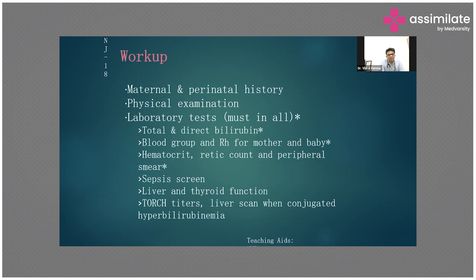What is the workup? First and most importantly, we need the details of the perinatal history — history from the mother's side regarding the number of pregnancies, gestational age, and mode of delivery such as forceps, vacuum, and caesarean section.